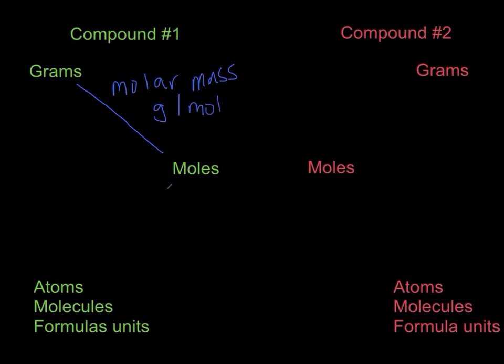If we're going from moles to atoms, molecules, or formula units, we're going to use Avogadro's number. So one mole is equal to 6.022 times 10 to the 23rd.